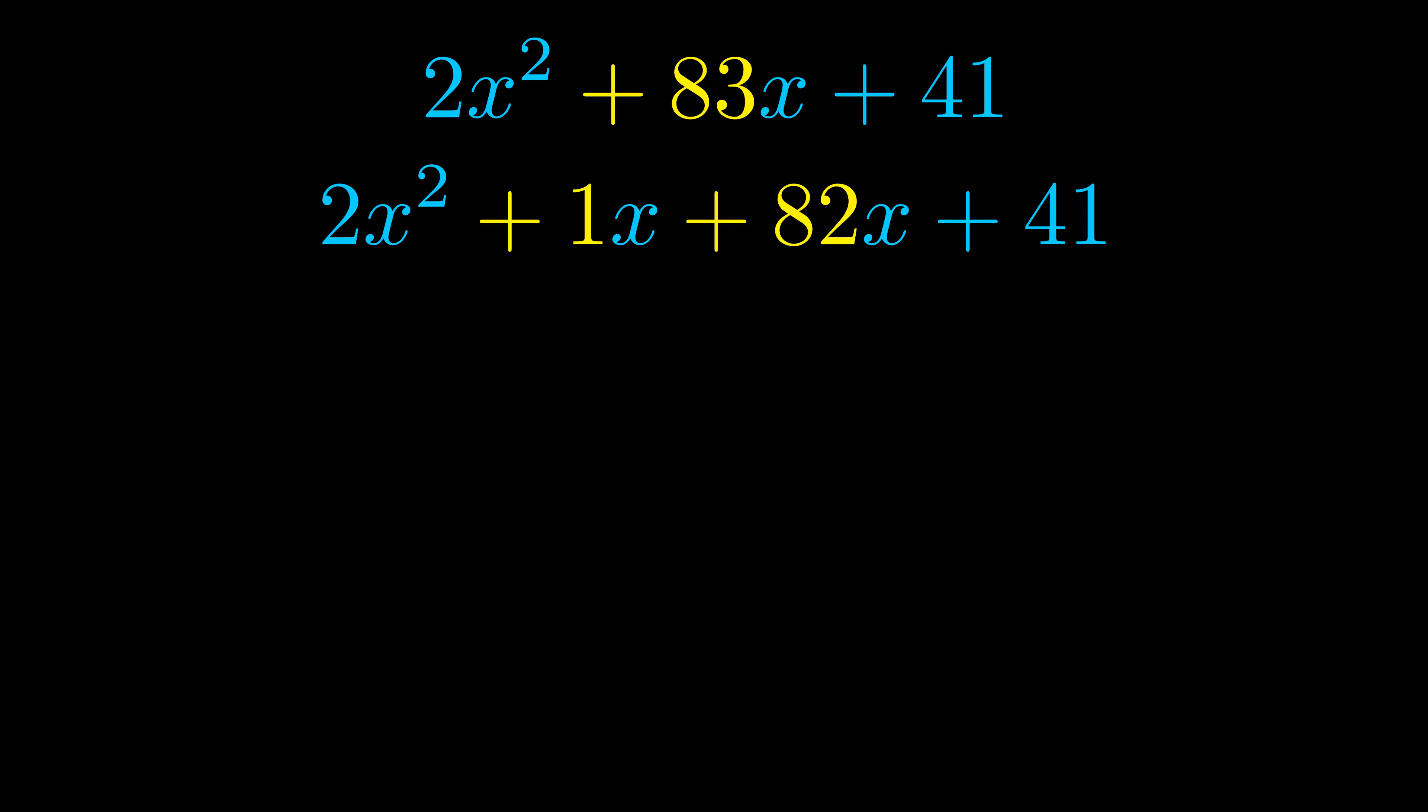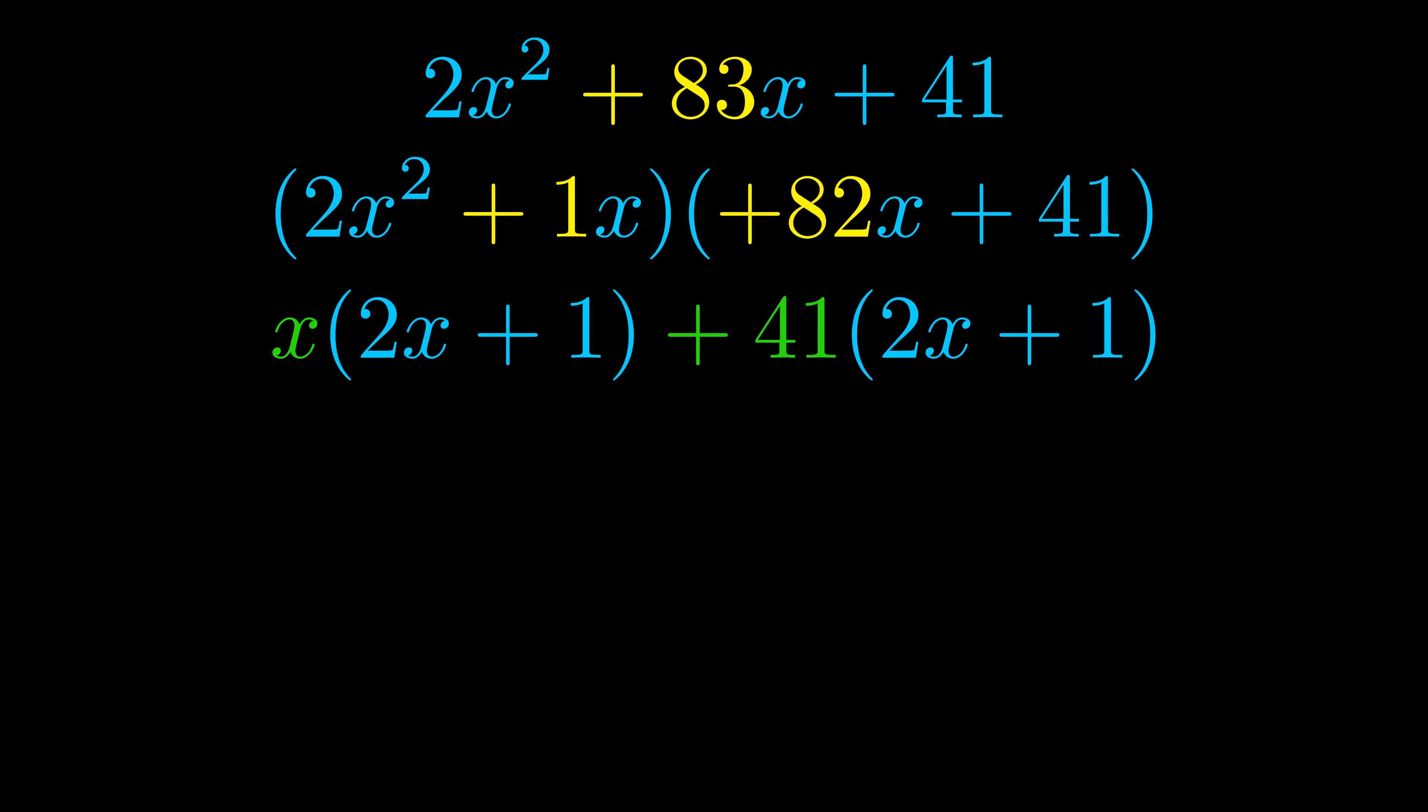Once we've done this we go ahead and we put parentheses around the first term and the last term. And we do that so that we can take the greatest common factor out of both terms. We can see the greatest common factor is now outside in green.